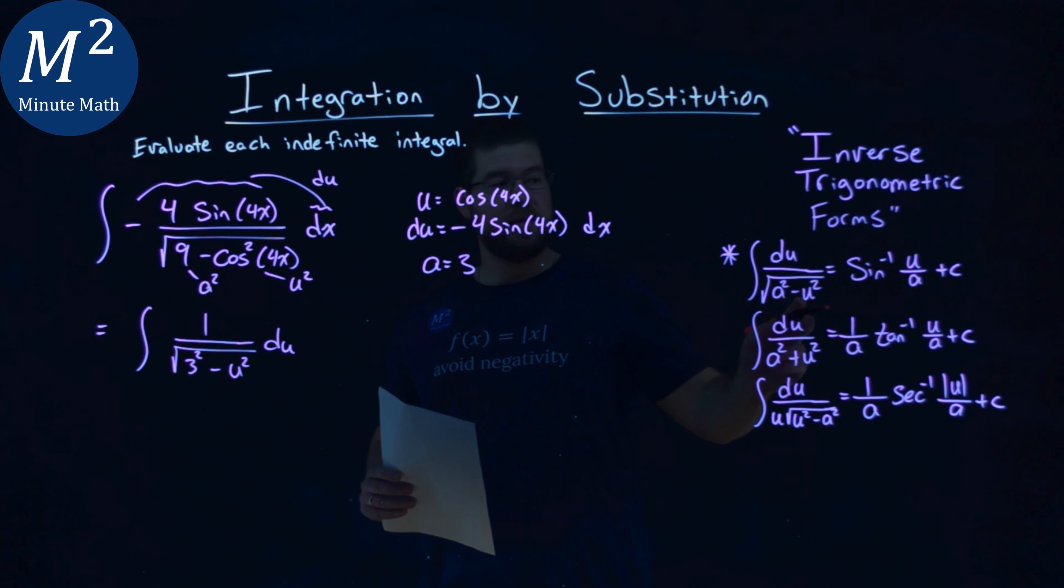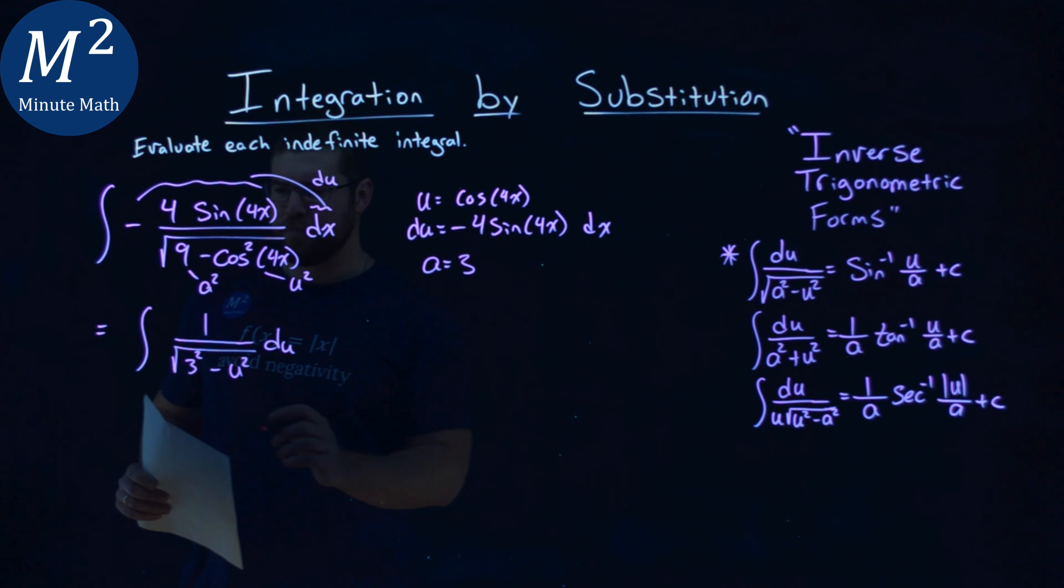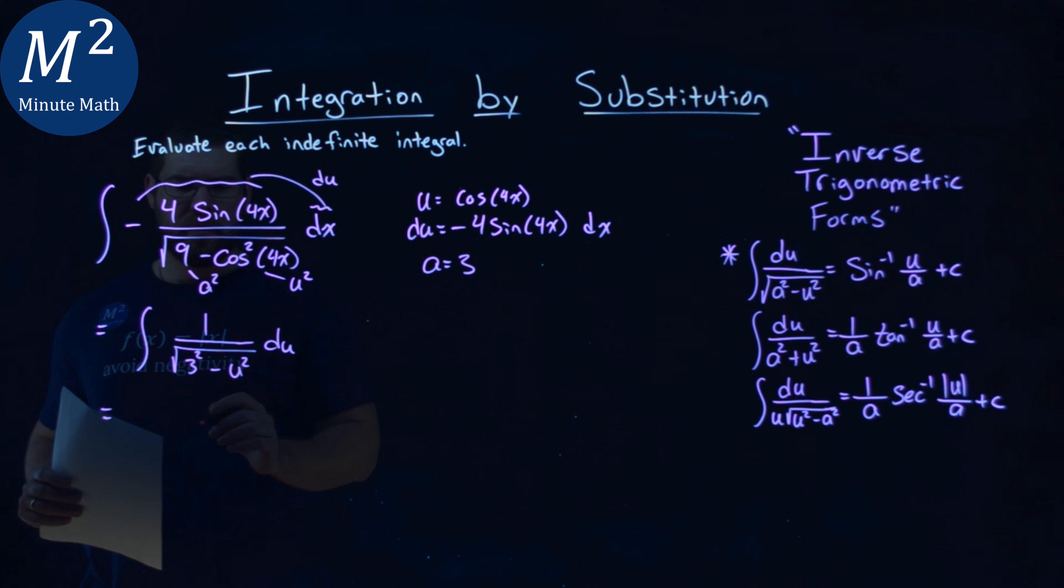With that, we can now apply the arc sine inverse trig form. We have the arc sine of the u-value over my a-value, which is 3, plus c. And it lines up great.